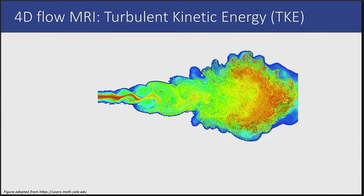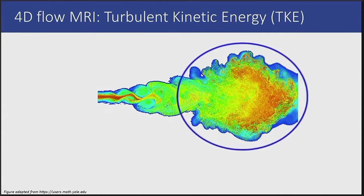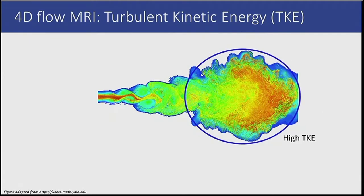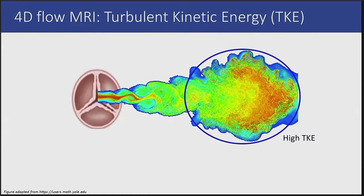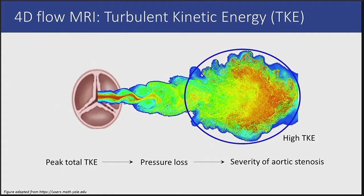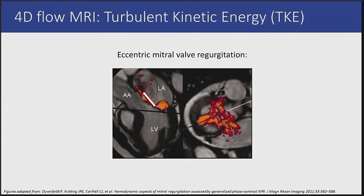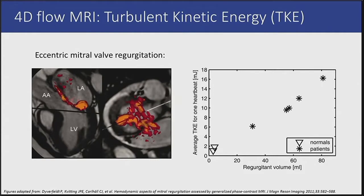As we saw, viscous energy loss occurs in non-turbulent flows such as vortical or helical flow. Flow can also be turbulent, meaning that velocities rapidly fluctuate in different directions in a chaotic manner. Turbulent kinetic energy, or TKE, reflects flow inefficiency in regions of turbulent flow. 4D-flow MRI can be used to derive velocity distributions in individual voxels and calculate TKE. This is useful downstream of a stenotic aortic valve, since it allows for estimation of the pressure loss over the valve and thus estimation of the severity of the stenosis. TKE quantification could also be useful for the assessment of mitral valve regurgitation, as left atrial TKE levels have been shown to closely relate to regurgitant volumes in patients with eccentric or angulated mitral valve regurgitation.